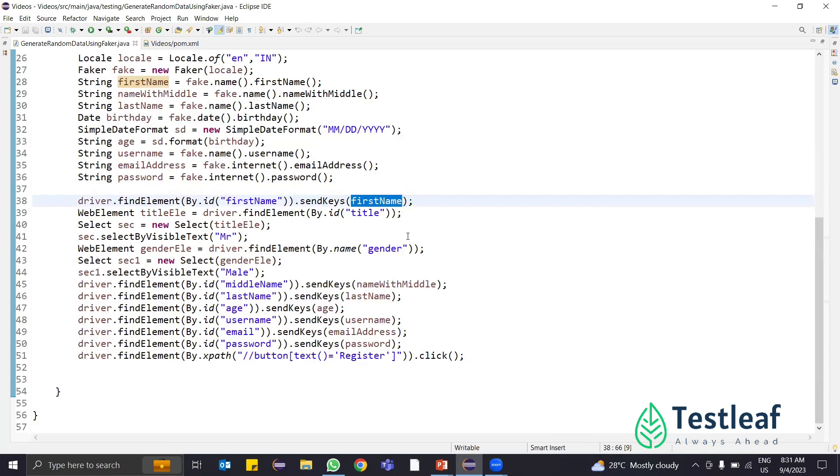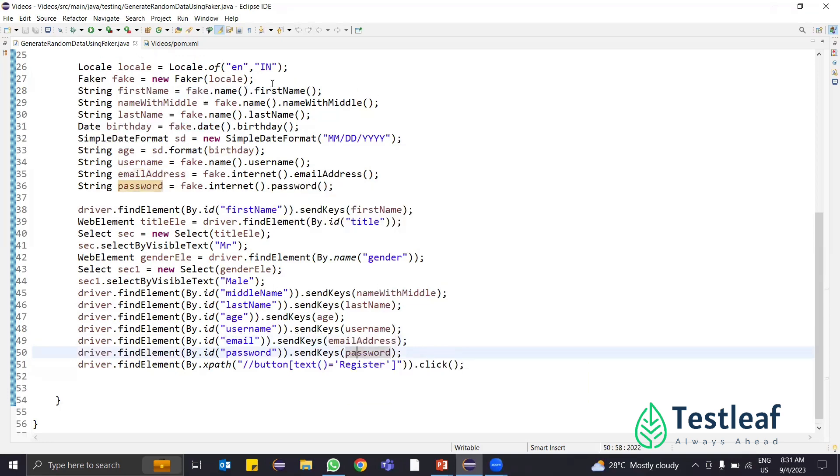Like middleName - I have already generated a random middle name and it will be generated and I will add it in my Selenium test. Wherever needed, I will add in my Selenium test. Whatever random data is generated will be added in the Selenium test. Last name, age, username, email address, password are already passed, which are actually generated by the Faker API.